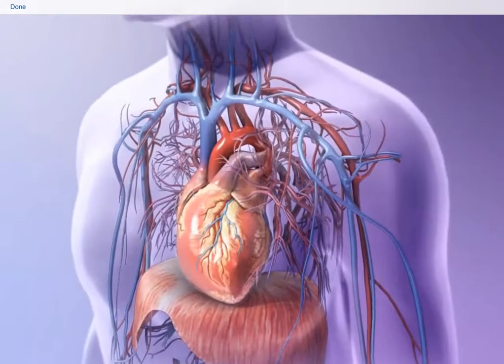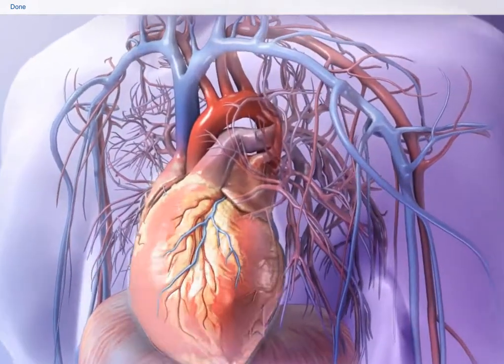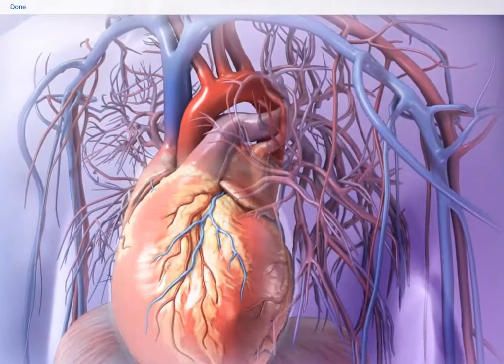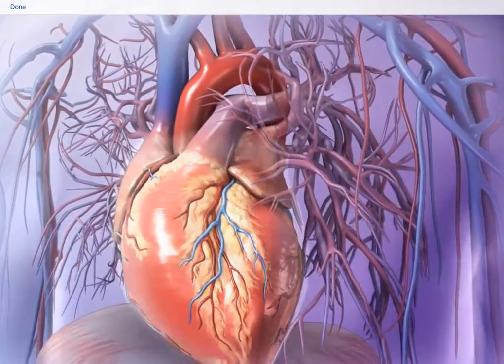The heart is a muscular organ that functions as a double pump to control blood flow. The heart of an adult male is slightly larger than that of an adult female.